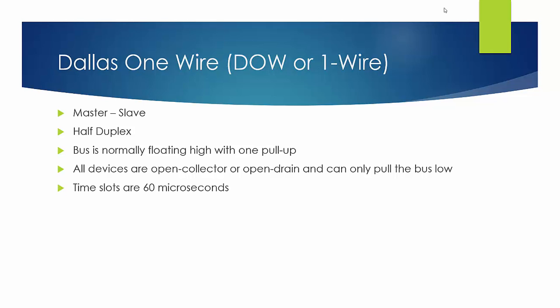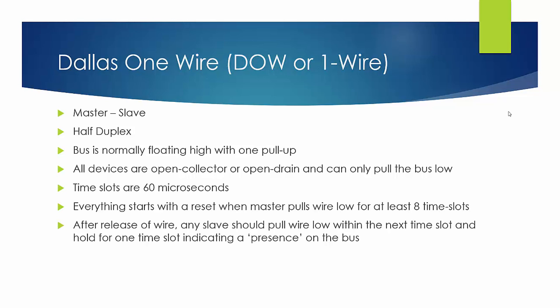Time slots for the communication are each 60 microseconds long, and everything starts with a reset when the master pulls the wire low for at least eight time slots. After the release of the wire, any slave that's on the bus should then pull the wire low within the next time slot and hold it low for one time slot to indicate its presence. That's called the presence signal. If there's no presence signal, the master presumes that no devices are available and it will quit.